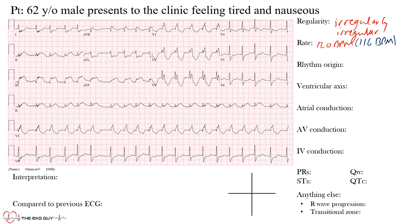Now, where is the rhythm coming from? The next portion is rhythm origin. Notice that the QRS complexes are somewhat wide. Normal QRS duration is less than 120 milliseconds — actually between 70 and 110 milliseconds — but here the duration comes out to 136 milliseconds, so there may be some conduction delay within the ventricles. Also, there are no clear P waves preceding the QRS complexes.